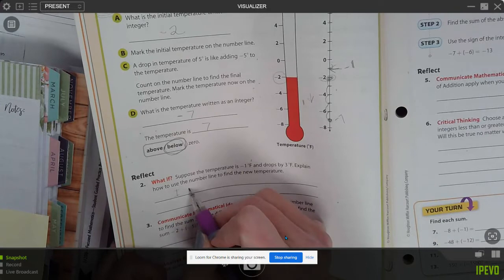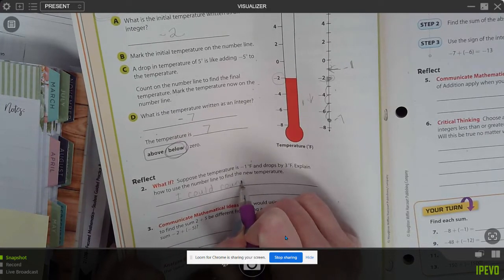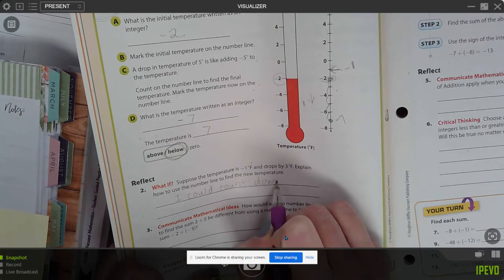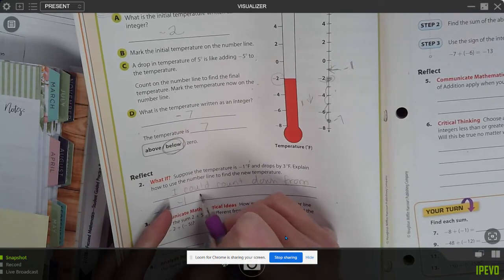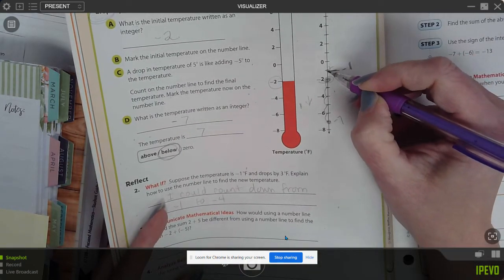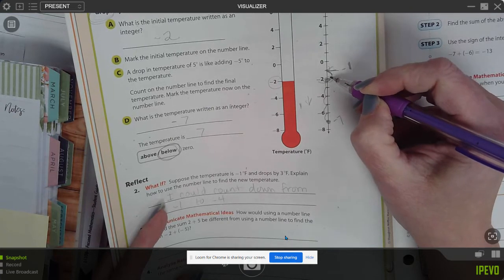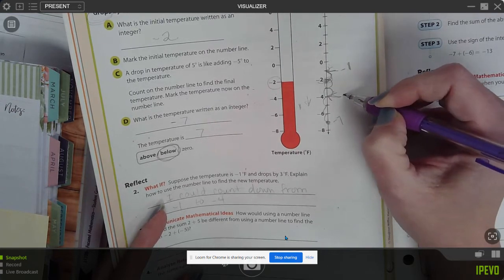So I would count down from negative one to negative four. I can prove that here's my negative one. And it drops three. One, two, three. So my new number is negative four.